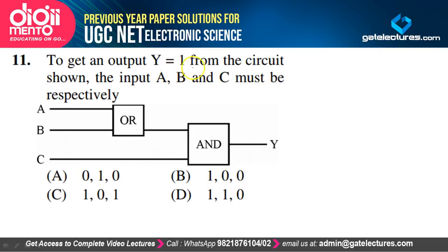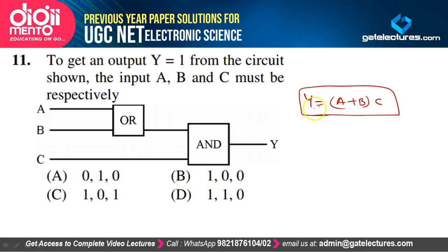To get output Y = 1 from Y = (A + B)·C, C must be 1; if C = 0, output is always 0. With C = 1, A and B must not both be 0 simultaneously. Option C satisfies our explanation.